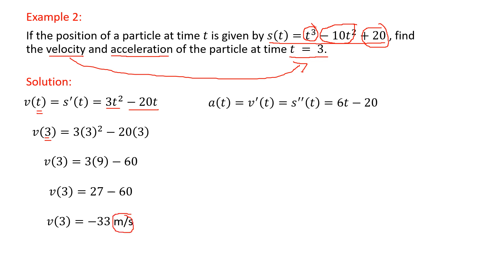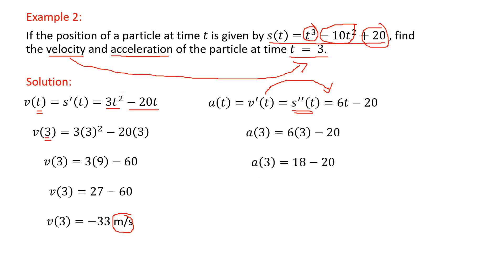Then we calculate acceleration, which is the second derivative of the position function — equivalently, the derivative of velocity. Differentiating the velocity gives 6t − 20. Substituting t = 3 gives a(3) = −2 meters per second squared.